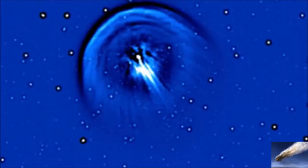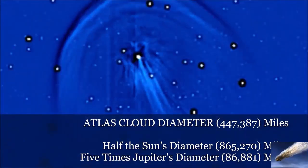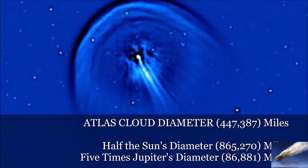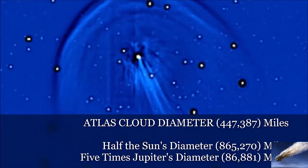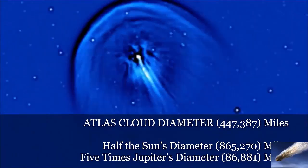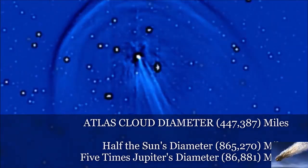What is apparent is that the comet is surrounded by a gaseous cloud that is more than 447,000 miles in diameter. This is half the size of the Sun's diameter and five times greater than Jupiter's diameter.